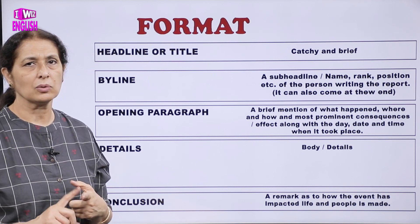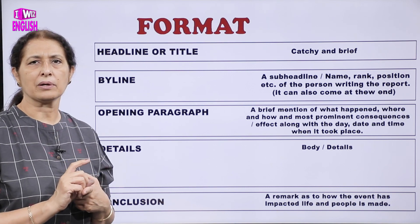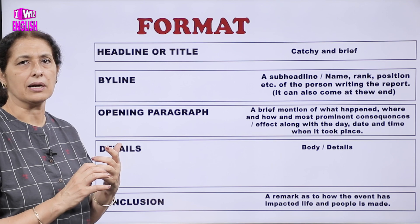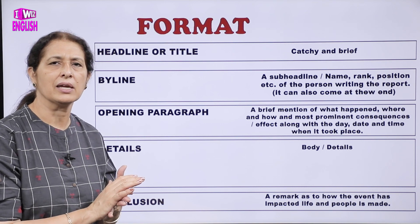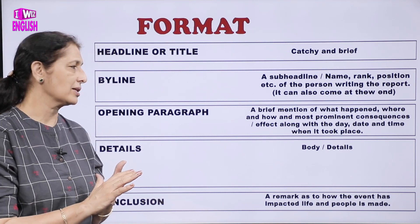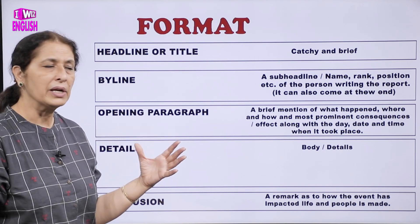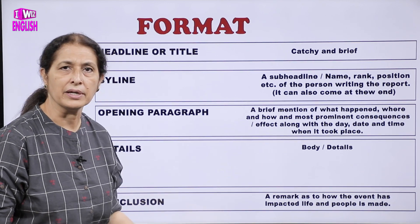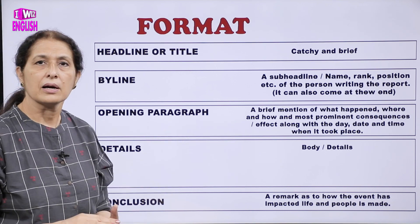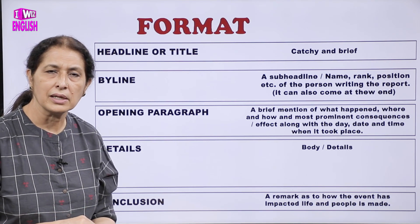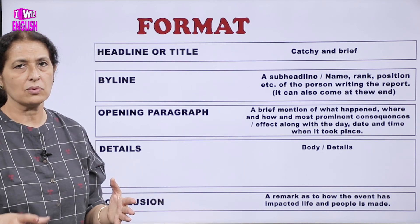Newspaper report aur school magazine report mein sirf itna sa farak hota hai: ke newspaper report mein aap date aur jagah pehle likhte hain, jabke school magazine mein yeh cheez first line mein hi incorporate hoti hai. Us opening paragraph mein ek brief mention hota hai of what happened — kya hua tha, yani ki yeh report kis cheez ke baare mein hai — where, kahaan hui thi, kab hui thi, and how — wo kaise hua, usse describe karta hai.